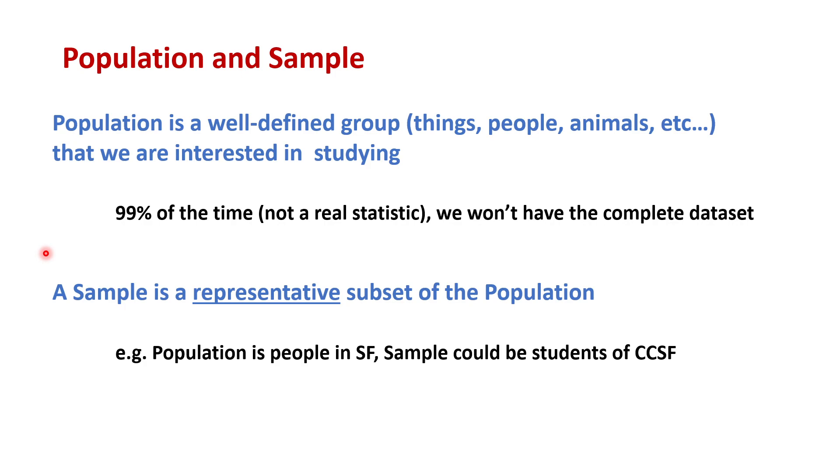Before you take a statistics class, we can kind of start to think about, is this a good representation? And I think intuitively, most of you could see there's a serious problem with using students of CCSF as a sample for people in San Francisco. For example, you don't have to actually live in San Francisco to be a student of CCSF. You could live in the North Bay, East Bay, or South Bay. And so that's one problem there. So that automatically disqualifies a lot of the students in CCSF as a representation for SF.